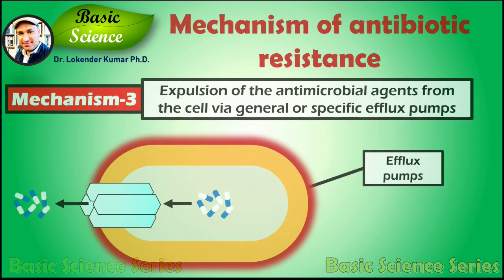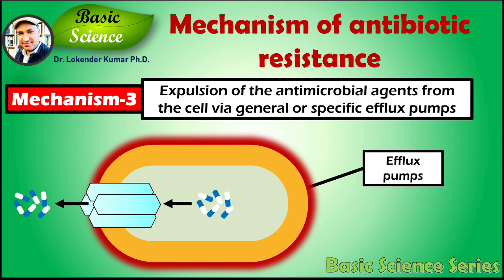The third mechanism is the expulsion of antimicrobial agents from the cell via efflux pumps. An efflux pump is a protein complex present on the surface of bacterial cells whose main function is to expel compounds not required inside the cells. Bacteria can develop new efflux systems to pump out antimicrobial agents effectively so they cannot bind to their target site. These membrane proteins act as export pumps, extruding the antibiotic out of the cell as fast as it enters.